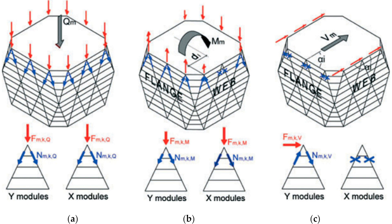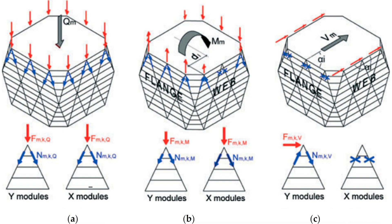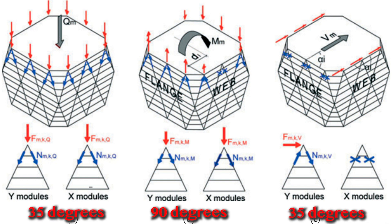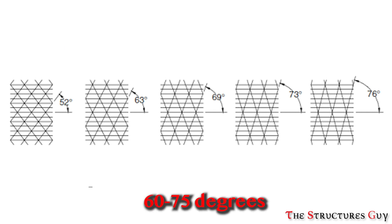Since there are no perimeter columns, the diagonal members in diagrid structures are designed to resist both shear and moment forces. It is known that the optimal angle for columns to resist bending moment is 90 degrees and the optimal angle for diagonals to resist shear forces is about 35 degrees. As a result, the optimal angle for diagrid structures usually falls in between both of these, which is about 60 to 75 degrees.